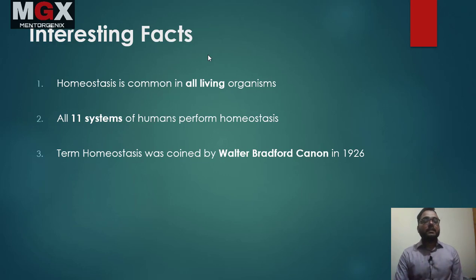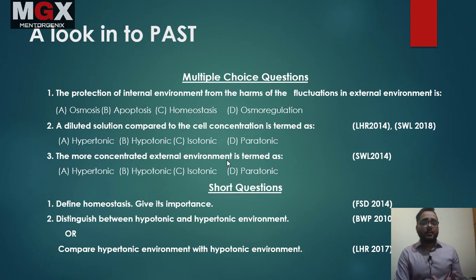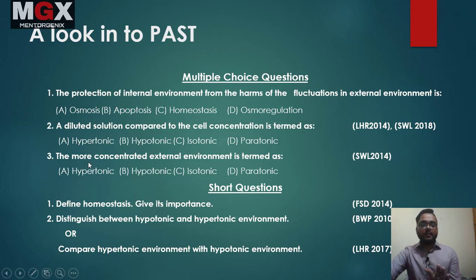Some interesting facts: homeostasis is common in all organisms. In our body, all 11 systems perform homeostasis. The term homeostasis was coined in 1926 by Walter Bradford Cannon. In past papers, the definition is: protection of the internal environment from the harms of fluctuation in external environment. A diluted solution compared to cell concentration is a hypotonic environment; a more concentrated external environment is a hypertonic environment.